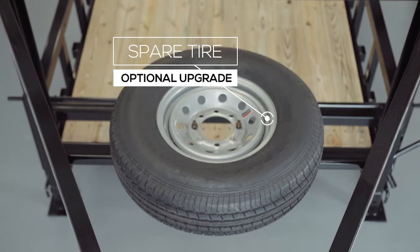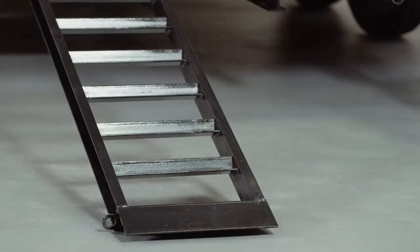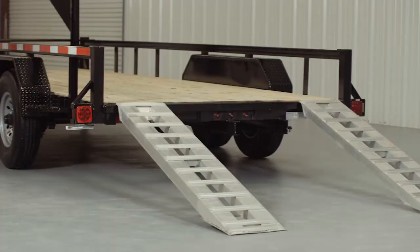As we walk to the back of the trailer we come to the standard 5 foot heavy duty steel ramps, which are available in your choice of either slide in or stand up style. We also offer aluminum ramps as an optional upgrade which are just as strong as steel but only half the weight.